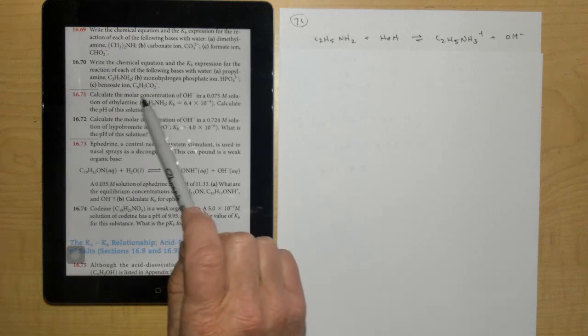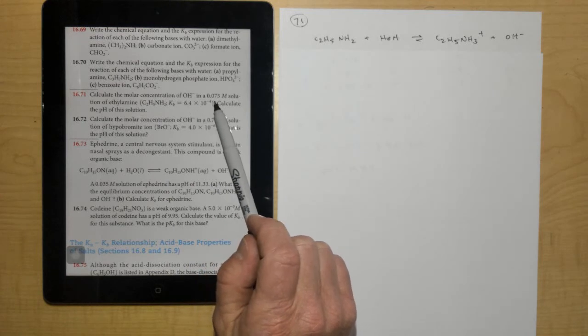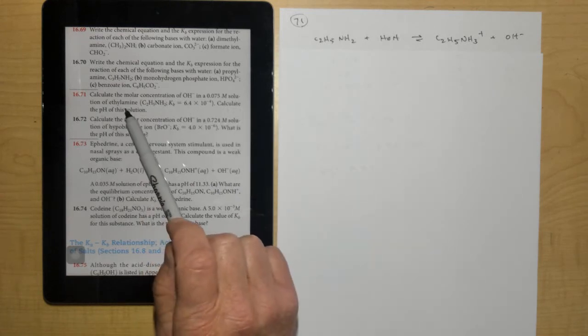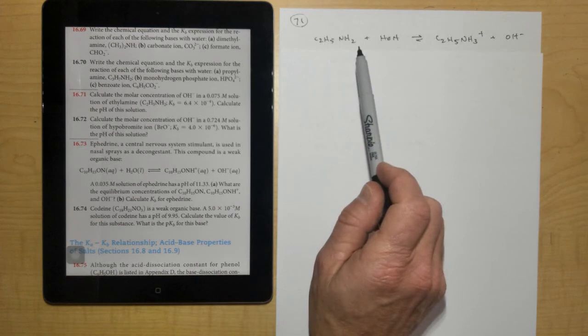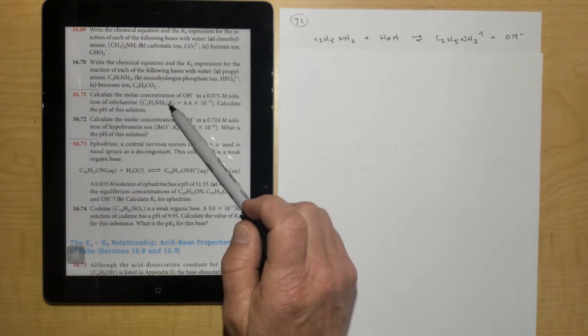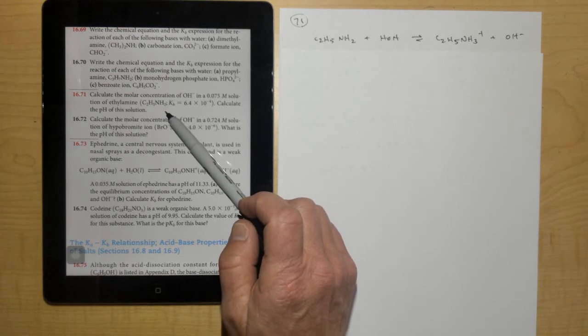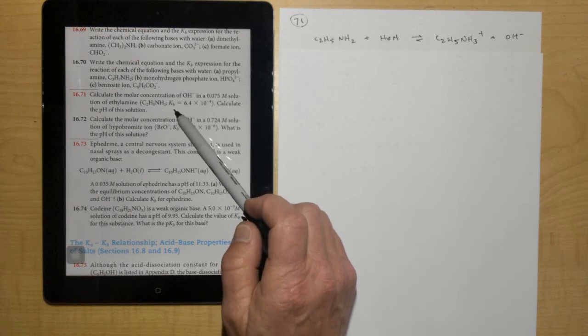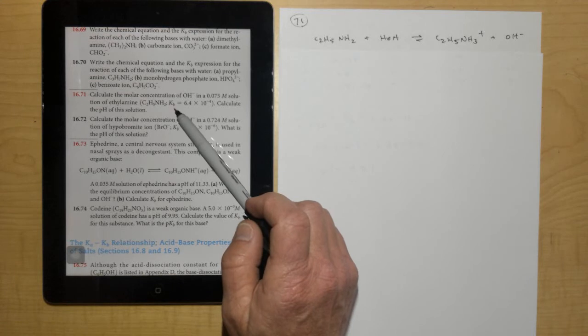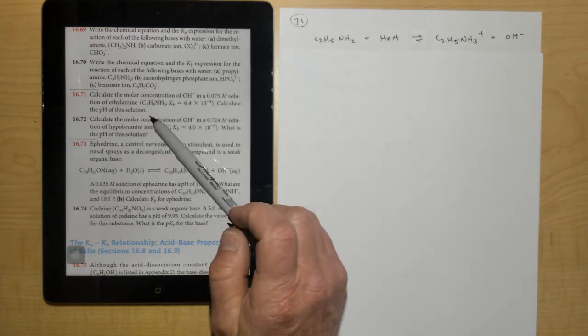Problem 71 says, calculate the molar concentration of OH minus in a 0.075 molar solution of ethylamine. So here's our ethylamine right here. Since you see it has an NH2, you'd probably guess it'd be a base, because NH2s are amines which are good at getting another hydrogen. And then you notice there's a little b below the k right here too, so you know that's a base, because that's a basic equilibrium constant. And then it says, calculate the pH of the solution.